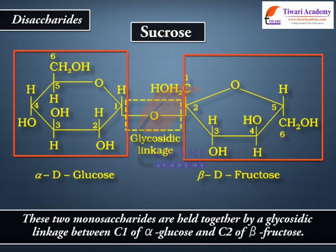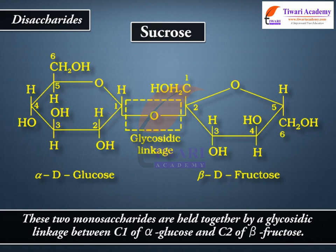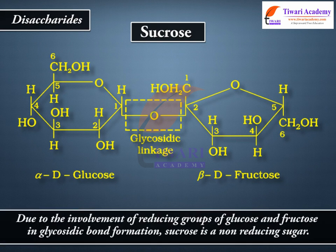These two monosaccharides are held together by a glycosidic linkage between C1 of alpha glucose and C2 of beta fructose. Due to the involvement of the reducing groups of glucose and fructose in glycosidic bond formation, sucrose is a non-reducing sugar.